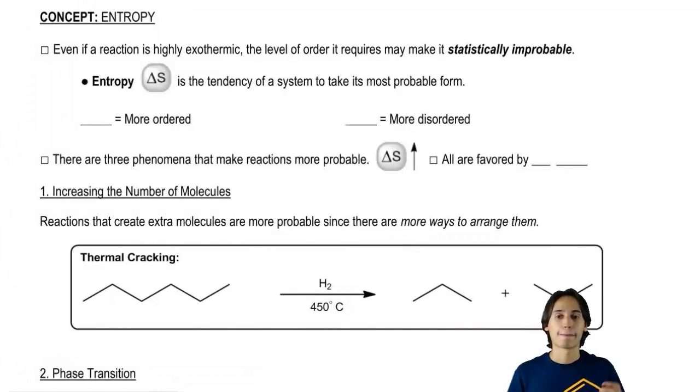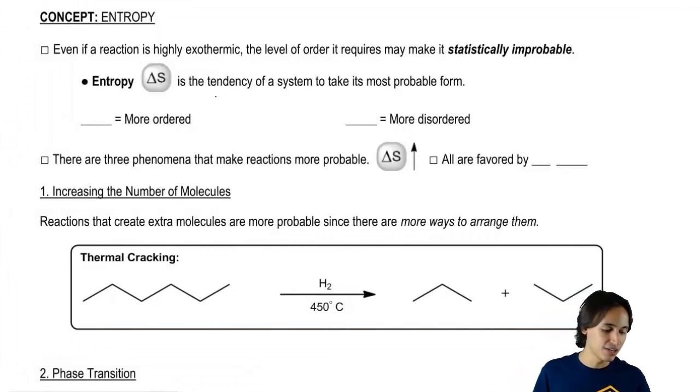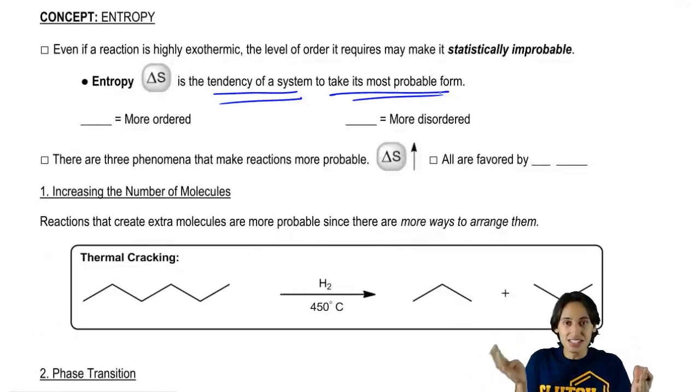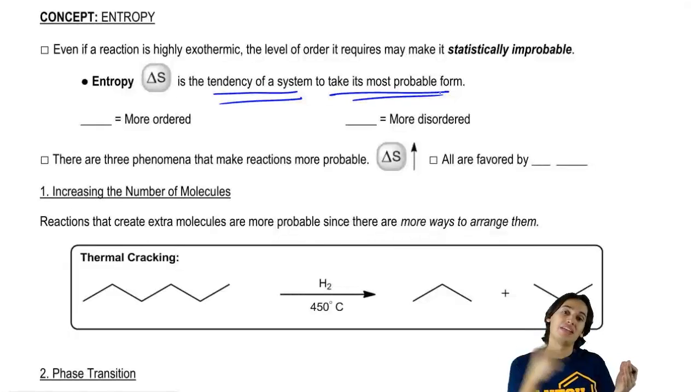So that means if we have two different states, one highly ordered and one not as ordered, statistically it's more likely to be in the disordered state. And that's what entropy has to do with - it has to do with probability.